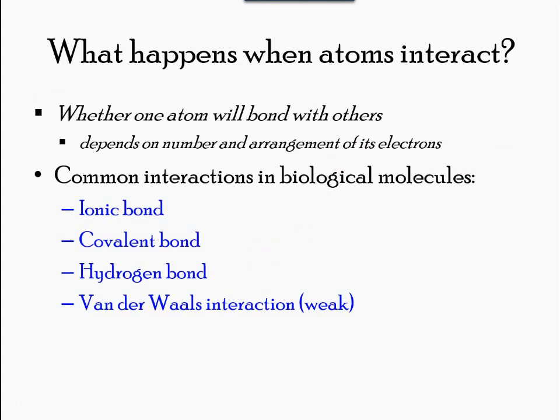How elements interact with one another depends on how their electrons are arranged and how many openings for electrons exist at the outermost region where electrons are present in an atom. There are four types of interactions: ionic, covalent, hydrogen bonds, and van der Waals interactions.